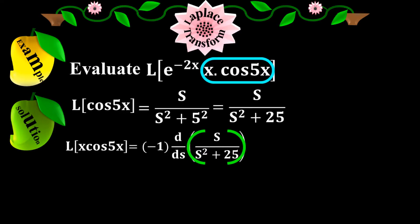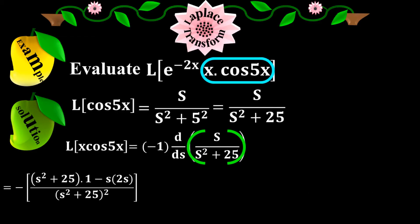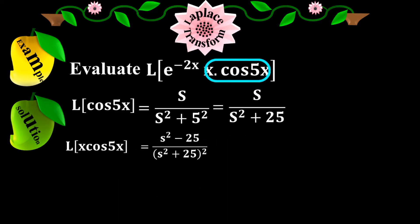Taking the derivative of s over s squared plus 25 with respect to s, and applying the quotient rule d/dx of u/v equals (v·du/dx minus u·dv/dx) over v squared, we get s squared plus 25 times 1 minus s times 2s, all over s squared plus 25 squared. Simplifying, this equals s squared minus 25 over s squared plus 25 squared. So the Laplace of x times cos(5x) equals s squared minus 25 over (s squared plus 25) squared.